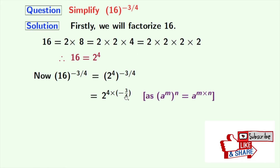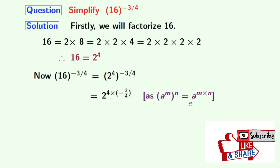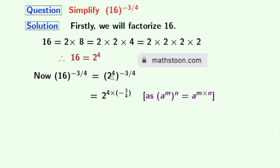Using the rule: a power m, whole power n, is equal to a power m times n. Here a is 2, m is 4, and n is minus 3 by 4. After simplification of the power we get 2 power minus 3.